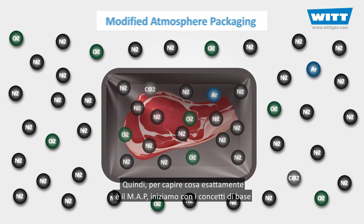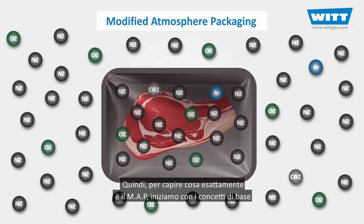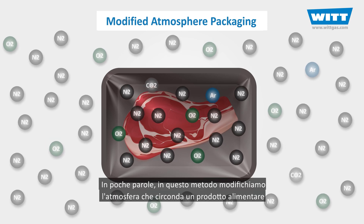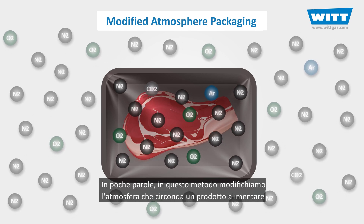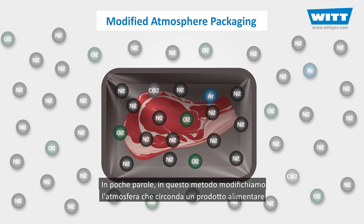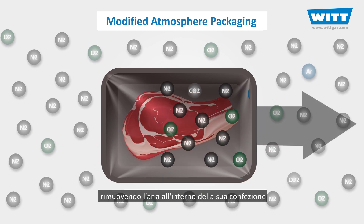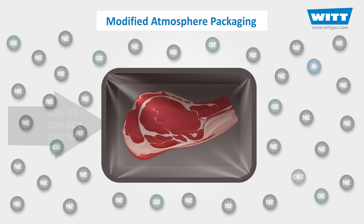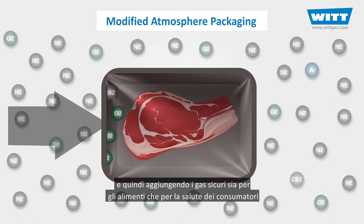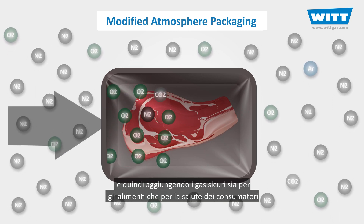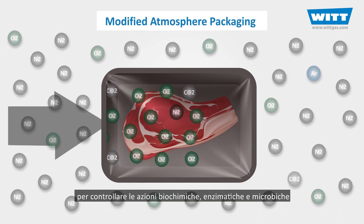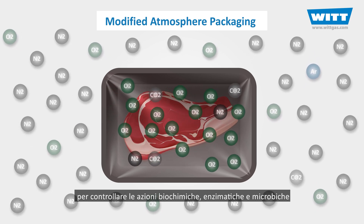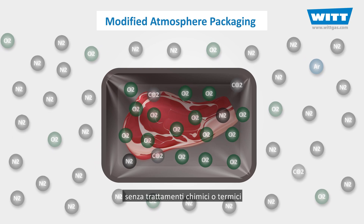To figure out what MAP exactly is, let's start with the basic concepts. Simply put, in this method we modify the atmosphere surrounding a food product by removing the air inside its package and then adding gases that are safe for both food and customers' health, to control the biochemical, enzymatic, and microbial actions without temperature or chemical treatments.